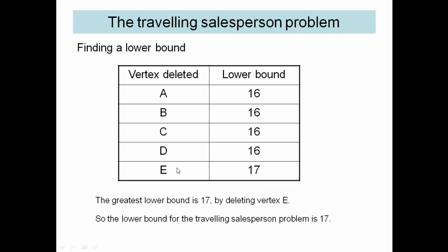And we know that because we have to have two arcs to each of these vertices and we have to connect the other vertices. So by finding this minimum connector and the two cheapest arcs to each vertex, we are finding the minimum possible weight of arcs that could make a Hamiltonian cycle.